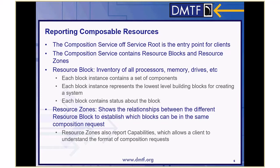Each resource block contains a set of components and status about the block. Each resource block also represents the lowest level building blocks for creating a system. For example, if a resource block contains one CPU and four memory devices, then all five of those components are available to the composed system if that resource block is used. Resource zones show the relationship between the different resource blocks in order to express which resource blocks are allowed to be in the same composition.